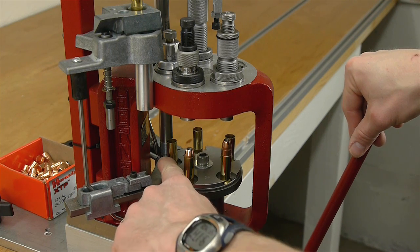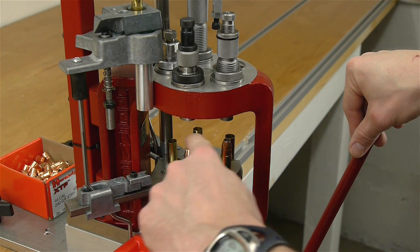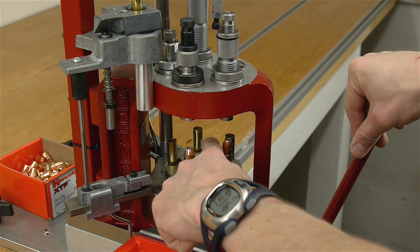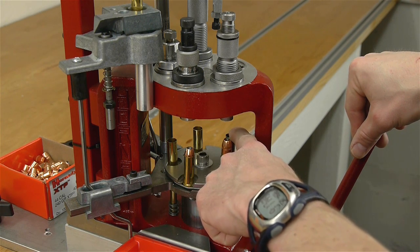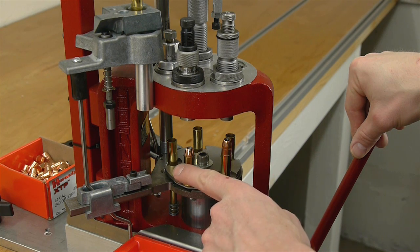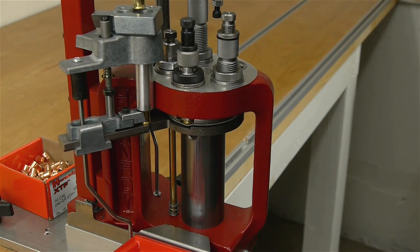Now in station one we have sizing and depriming. Station two we have priming on the bottom and charging on the top. Station number three we're not using, we could use a powder check die there. Station number four we're seating and in station number five we're crimping. So let's take a look at what that looks like.